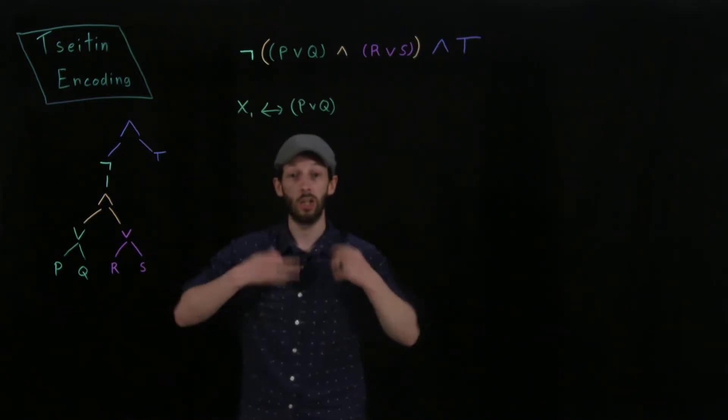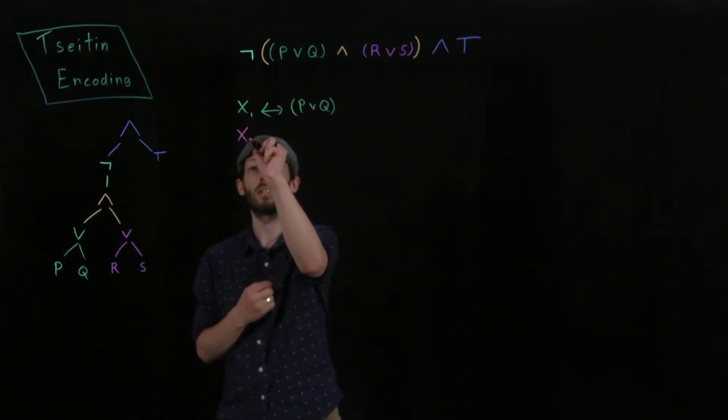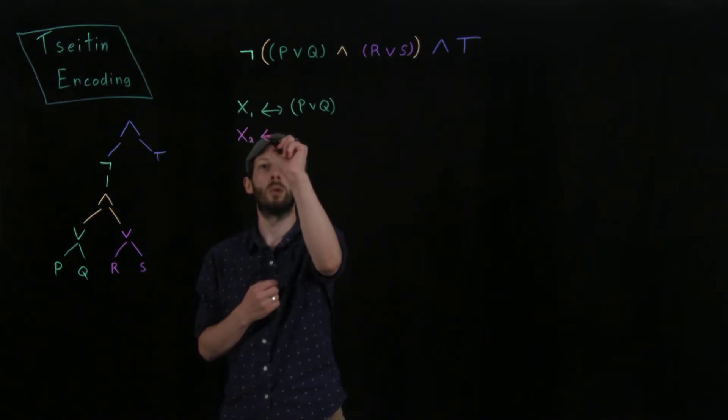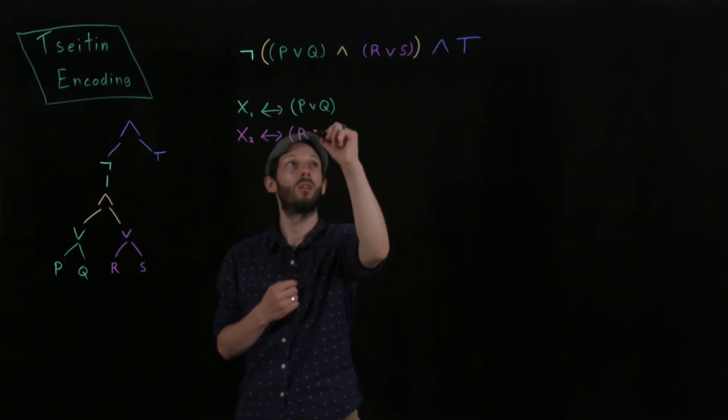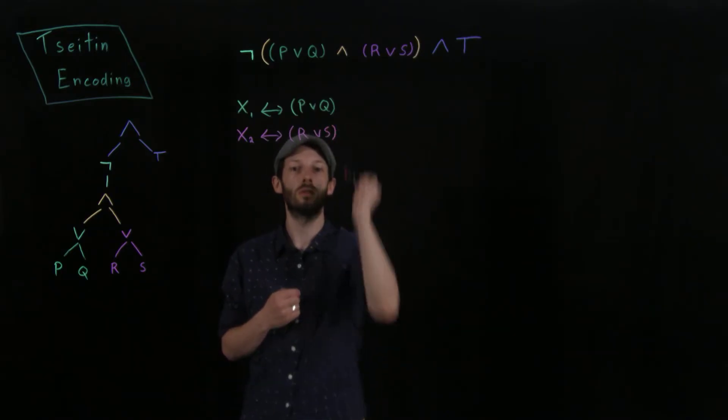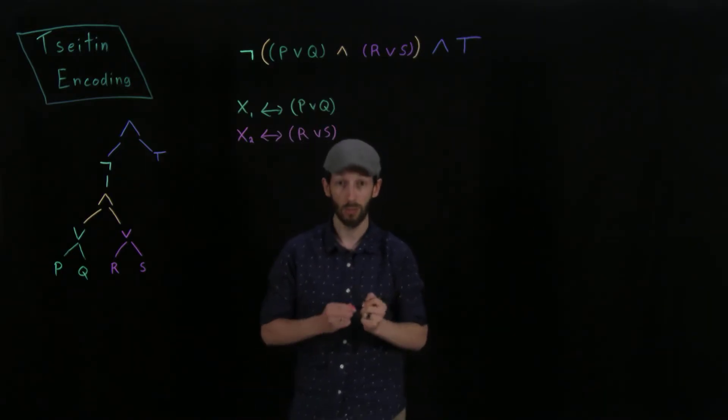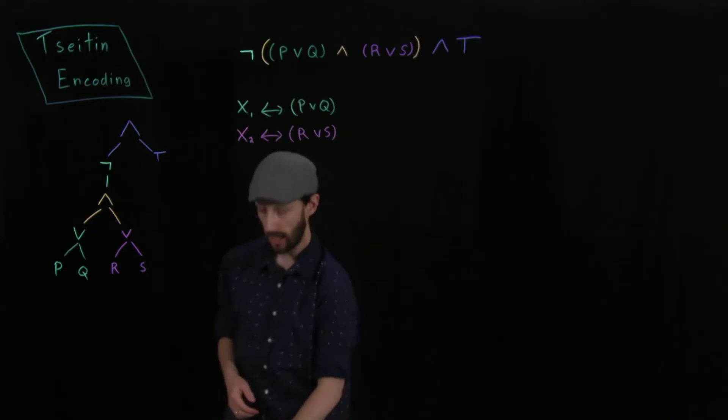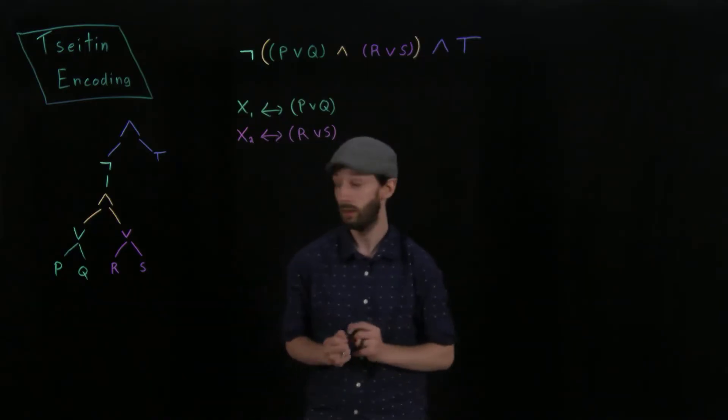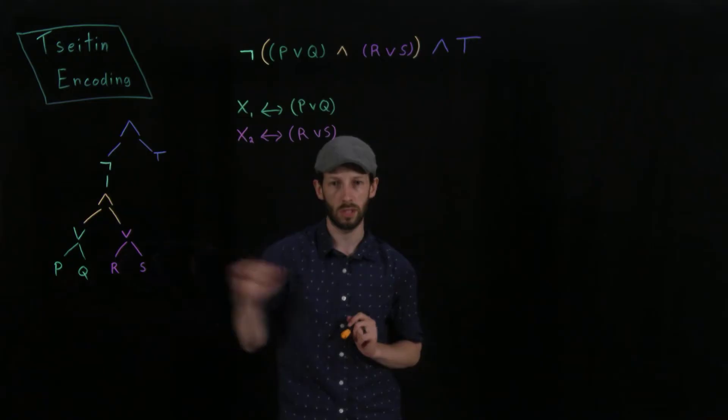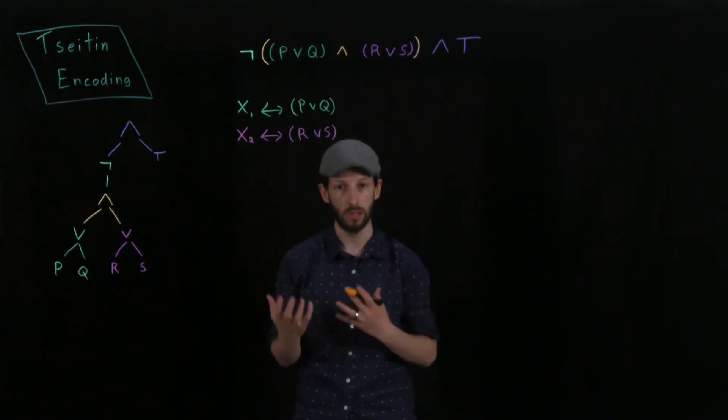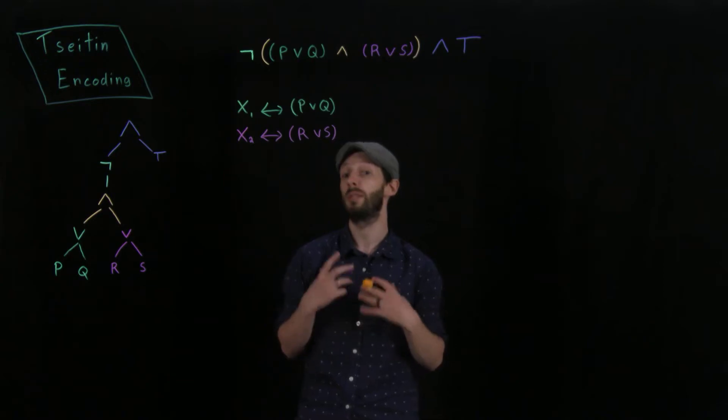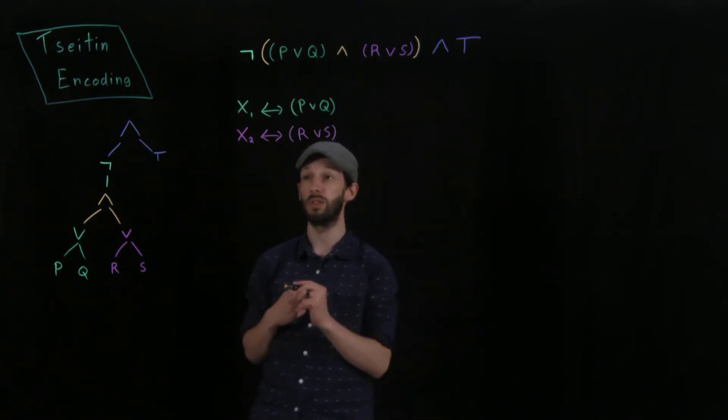So similarly, we'll create a new auxiliary variable x2 and it's going to hold if and only if R or S holds, right? So now we have two auxiliary formulas and we want to tie these two together, right? So if we look at our parse tree, it's a conjunction between those two subformulas and we want to be able to tie them together. Instead of talking about P's, Q's, R's, and S's, we can now use the auxiliary variables in order to get the job done.